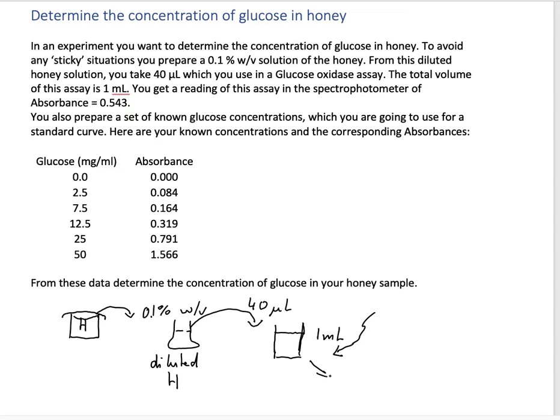We get an absorbance of 0.543. That's the basic scheme. Now we need to figure out how to prepare this 0.1% weight per volume solution in the first place.